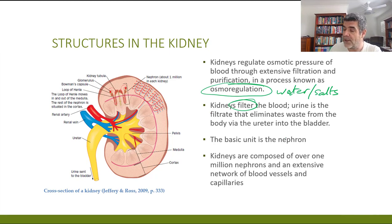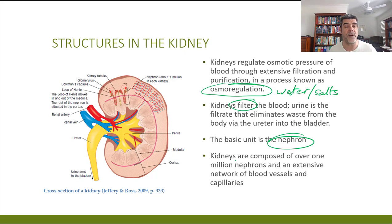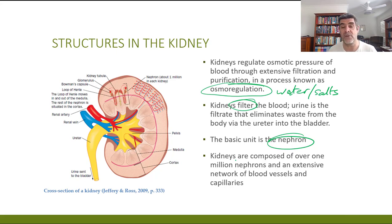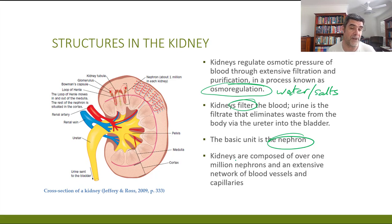As I mentioned, the most important unit we need to talk about in the kidney is the nephron, and we will look at that in a little bit of additional detail. There are over a million nephrons in each of your kidneys, and each of those nephrons is associated with a network of blood vessels and capillaries.